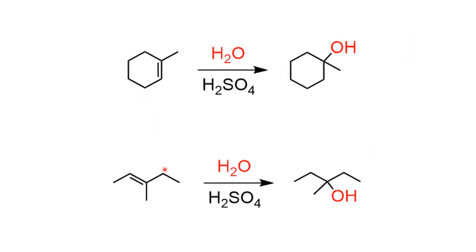Similarly, we see another example. In this second example, it is an acyclic system. Looking at the two carbon atoms, carbon 1 and carbon 2: carbon 2 is less substituted. So the negative part will go to carbon 1, and that is how we get the product. It is very clear that whenever an alkene reacts in the presence of acid to form an alcohol, it follows Markovnikov's rule.